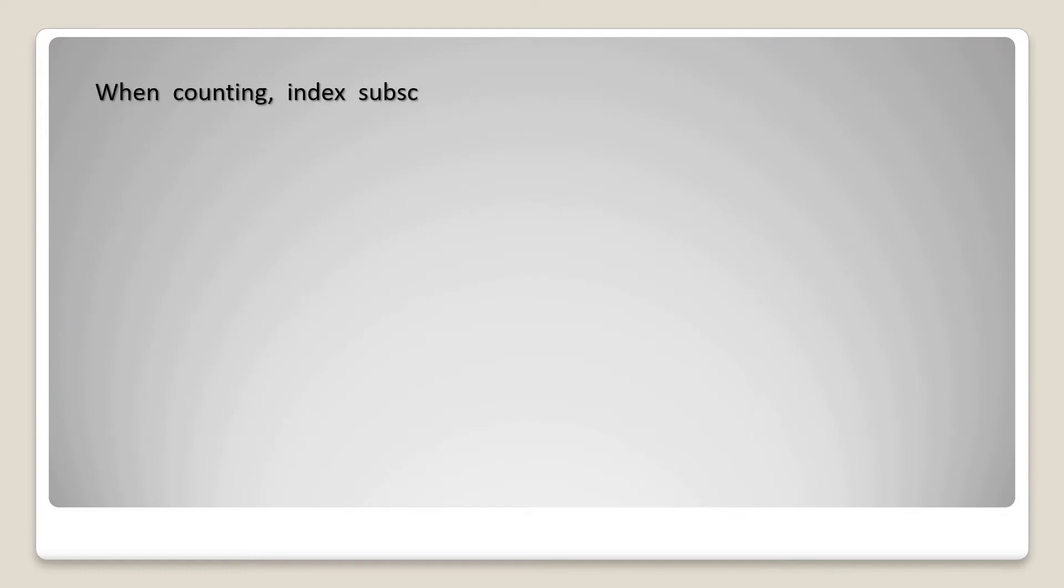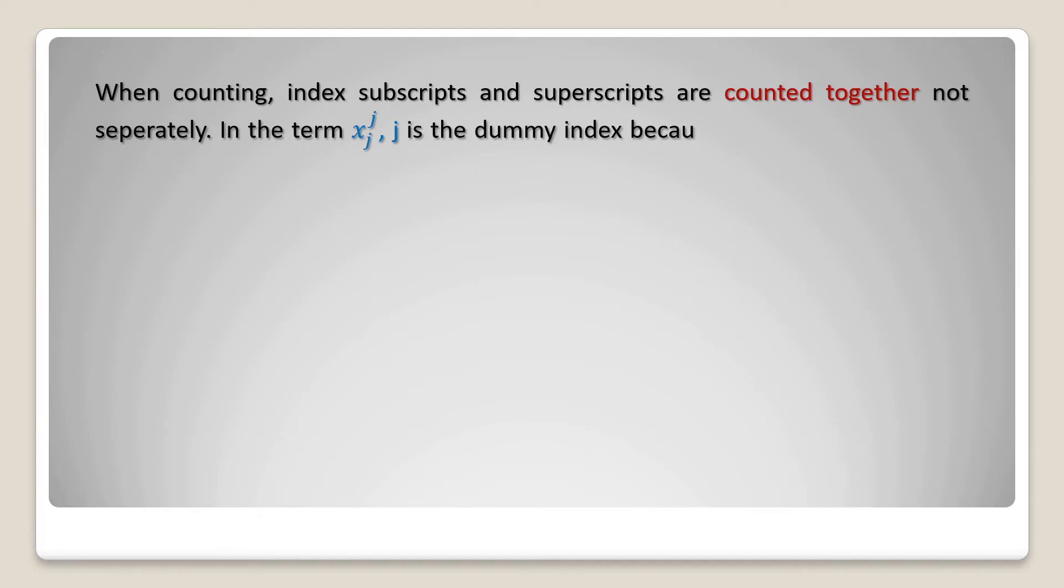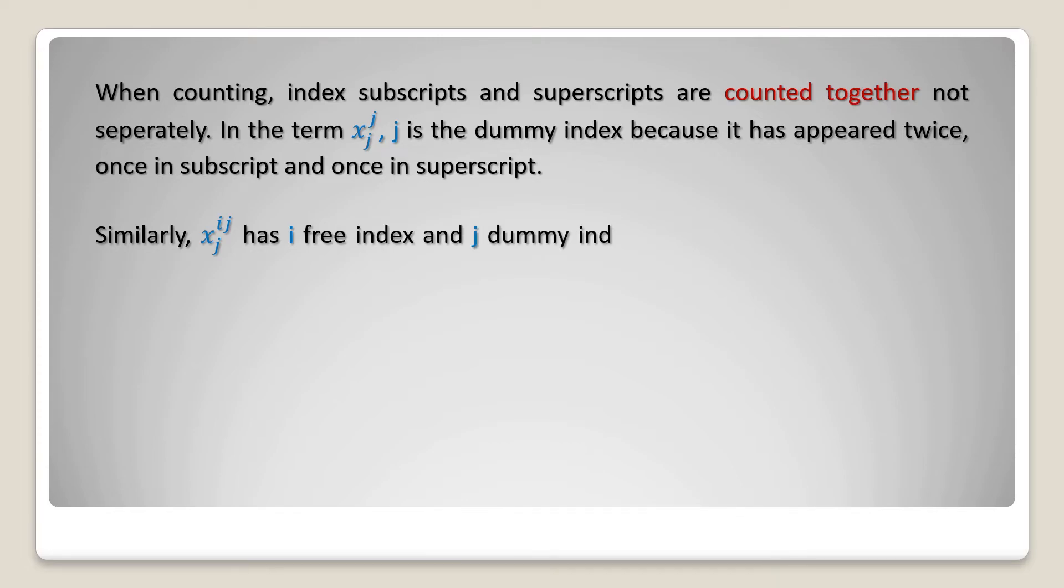When counting, index subscripts and superscripts are counted together, not separately. In the term xij j, j is the dummy index because it has appeared twice, once in subscript and once in superscript. Similarly, xij has i as a free index and j as a dummy index. These rules are applicable in only a single term.